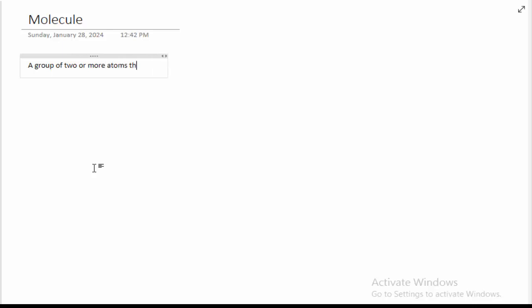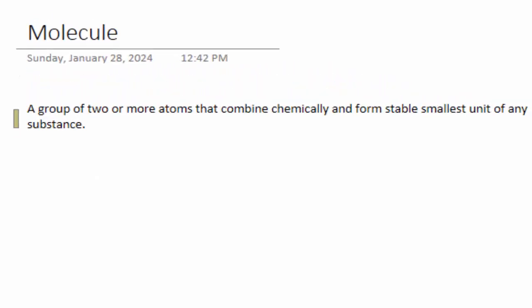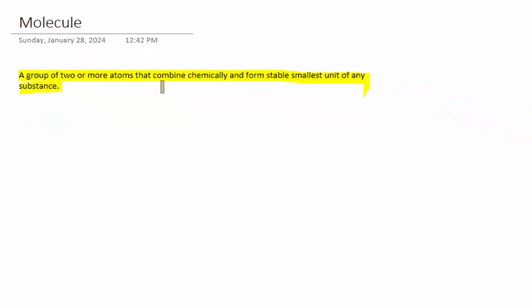Now, what is a molecule? A group of two or more atoms that combine chemically and form the stable smallest unit of any substance. What is the meaning of molecules? A group of two or more atoms. When we create a chemical bond and form an individual stable unit, we will say that it is a molecule.